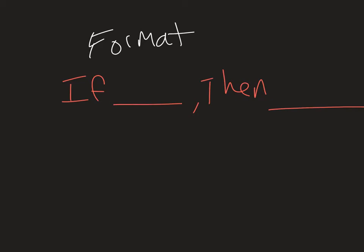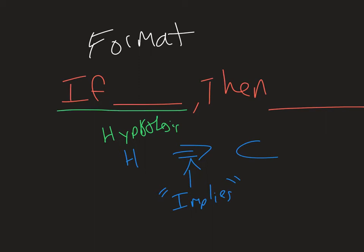Now, for shorthand, we have h implies c. That's what this little arrow means is implies. And it basically means if h, then c. Now, the reason we use h and c here, the if part is our hypothesis. And I'm not a huge fan of the term, but this is what it's called. It's basically your conditions. If you have this stuff happen, then I can deduce what will happen next. And what we call c is the conclusion.